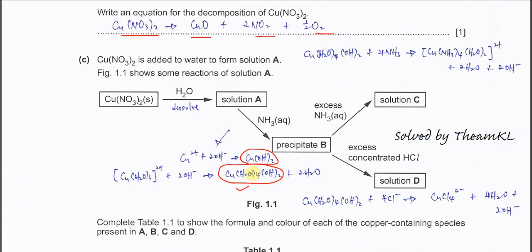When excess ammonia is added, solution C forms. When the question asks for an equation, you must give the equation starting from the precipitate. With ammonia added, it will form the complex: copper with 4 ammonia and 2H2O — [Cu(NH3)4(H2O)2]²⁺. This is the octahedral complex. It removes 2H2O and 2 hydroxide from the previous precipitate.